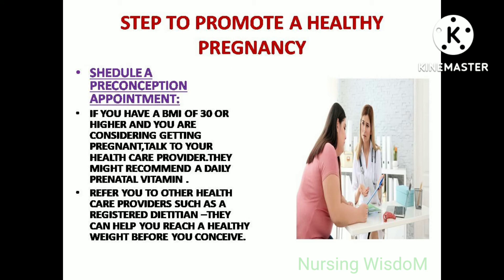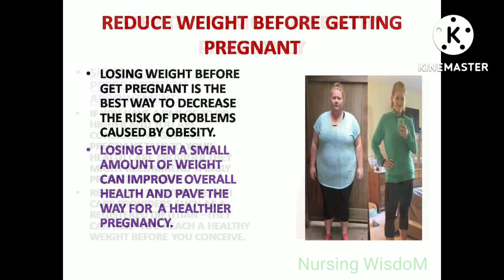Steps to promote a healthy pregnancy: schedule a pre-conception appointment. If you have a BMI of 30 or higher and are considering getting pregnant, talk to your healthcare provider. They might recommend a daily prenatal vitamin and refer you to other healthcare providers such as a registered dietitian to help you reach a healthy weight before you conceive. Losing weight before getting pregnant is the best way to decrease the risk of problems caused by obesity — even losing a small amount of weight can improve overall health and pave the way for a healthier pregnancy.